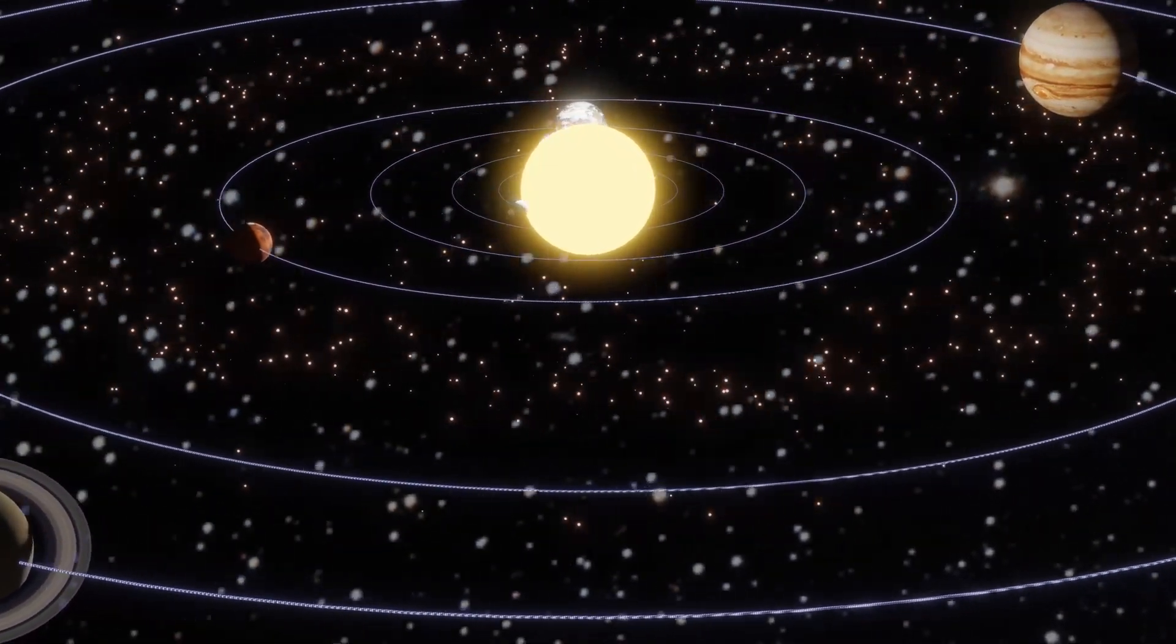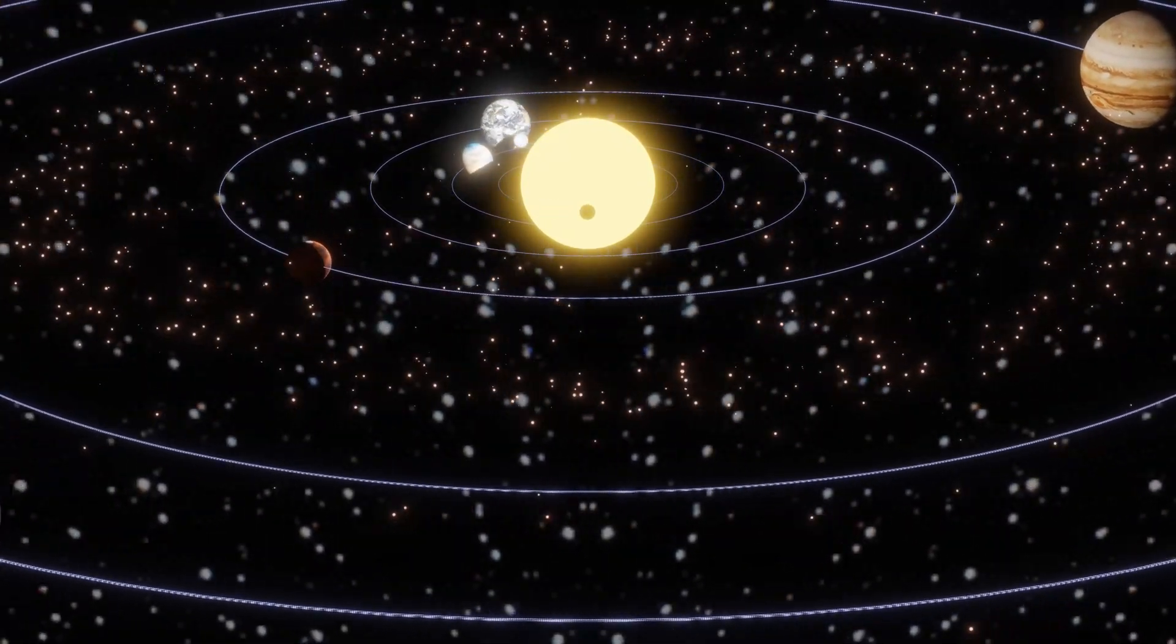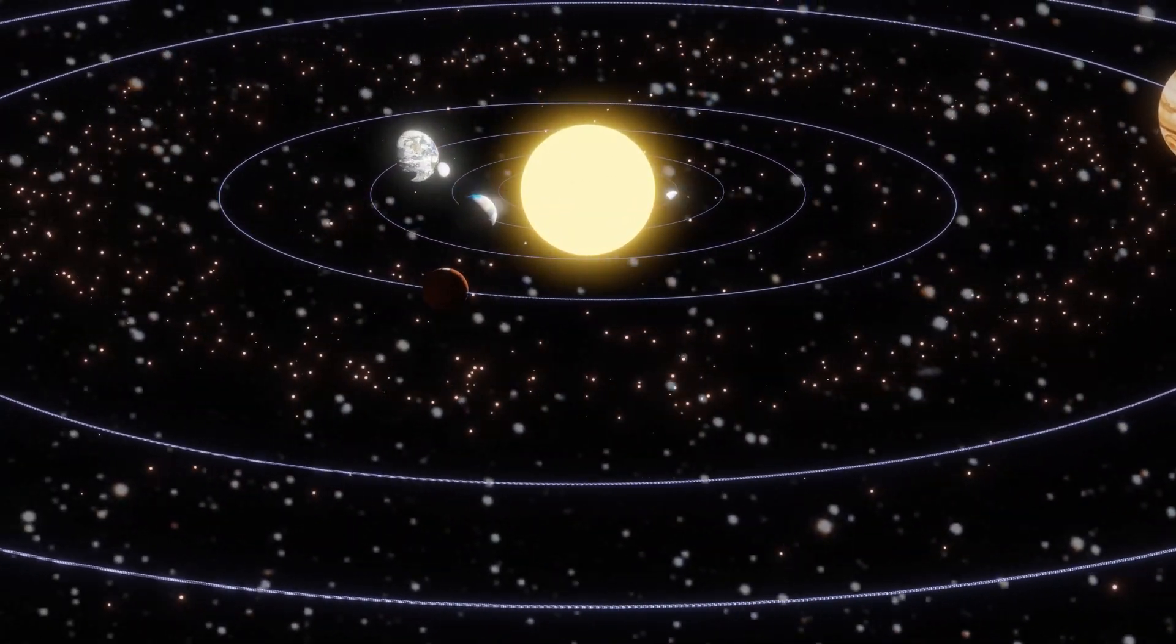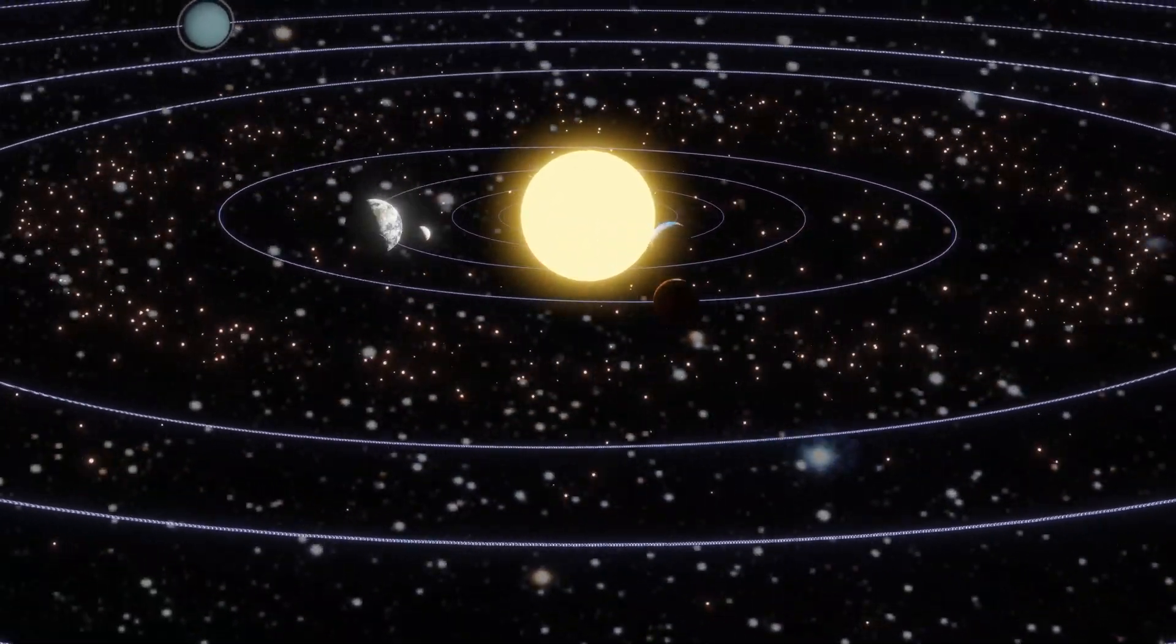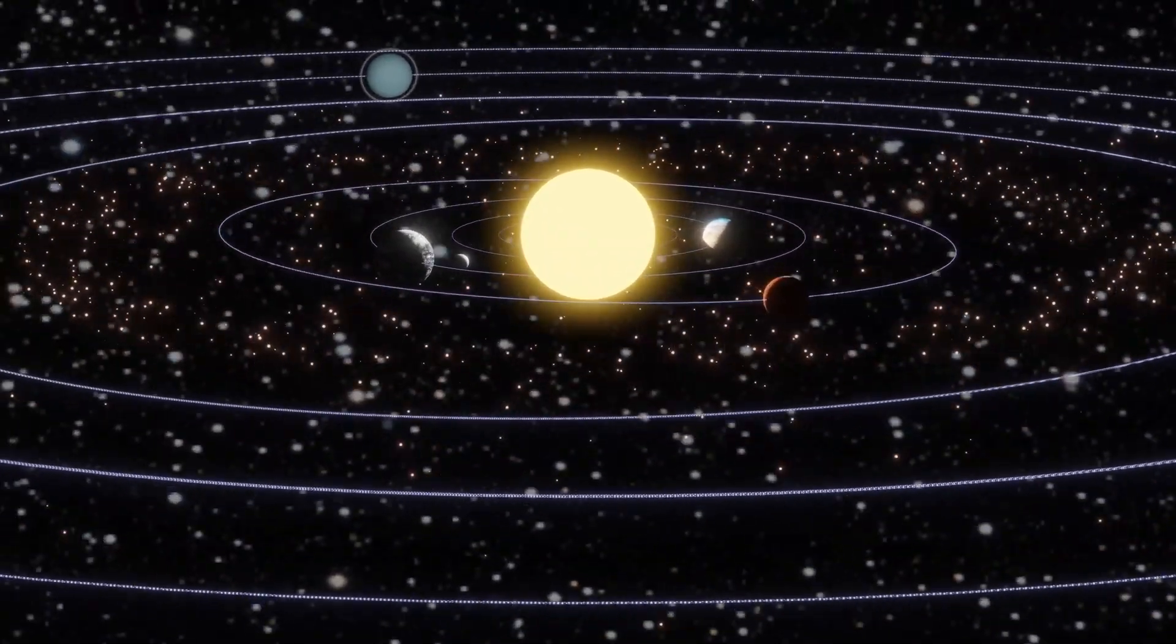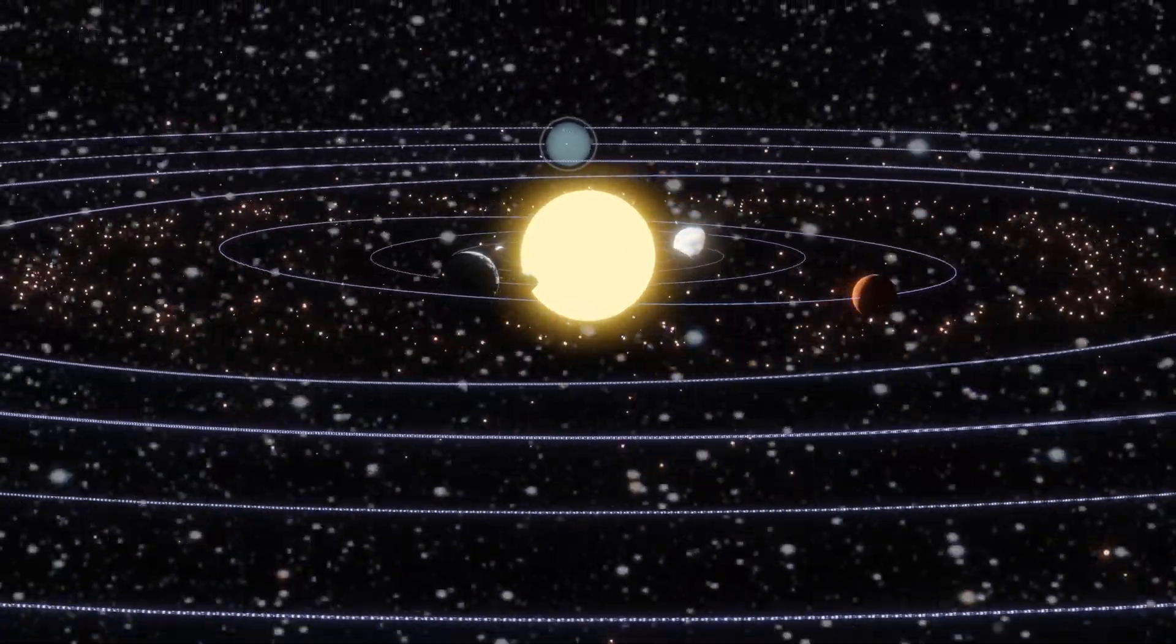The solar system formed about 4.6 billion years ago from a giant cloud of gas and dust called a solar nebula. Over time, the gravity of the cloud caused it to collapse and form a spinning disk, which eventually formed into the planets, moons, and other objects that we see today.